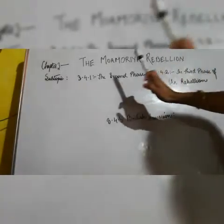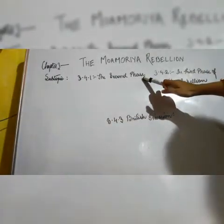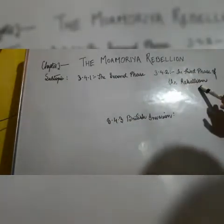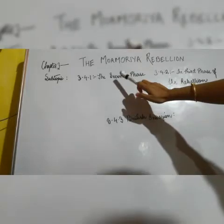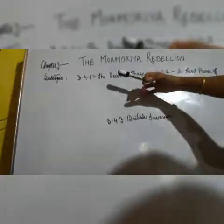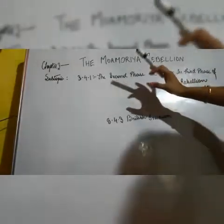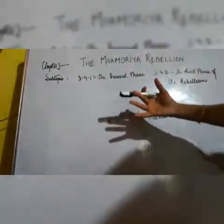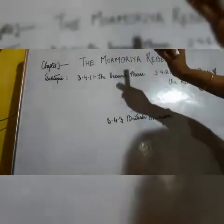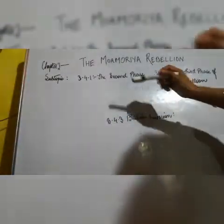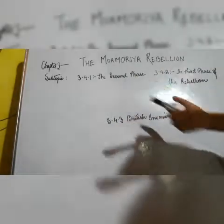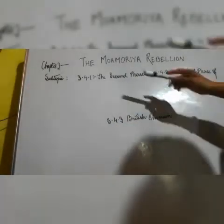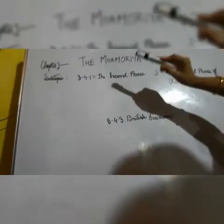Hello students, welcome to today's class. Today we are going to start the sub-topic: second phase of the Moamaria Rebellion, third phase of the Moamaria Rebellion, and ultimately British invasion. In this topic we will discuss what happened in the second phase. In the last class we discussed how the first phase ended — the atrocities of Ketisandra Borbara during the reign of Lakshmi Singha and how the Moamorias attacked and took revenge.